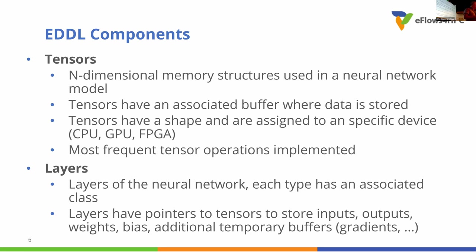Tensors have a shape assigned to a specific device, and you have most of the typical tensor operations: you can resize tensors, change dimensionality, and do all the things you usually need. Layers build a neural network model. Typical layers have been implemented because we are targeting deep health use cases — 14 use cases for health systems from Alzheimer to skin cancer. Most rely on images and 2D convolutions. We also have activation functions. If you want to implement a new layer, in about five minutes you can do it using a template.